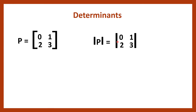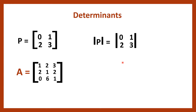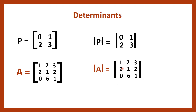This can be read as the determinant of 0, 1, 2, 3. In the same manner, we can find determinants for 3 by 3 matrices as well. Suppose A is a given 3 by 3 matrix; then we can find the determinant of A. It is written as the determinant of 1, 2, 3, 2, 1, 2, 0, 6, 1. So, instead of square brackets, if we put two lines on both sides of the numbers, we understand we are finding the determinant of that matrix, and the operation gives a simplified determinant value.